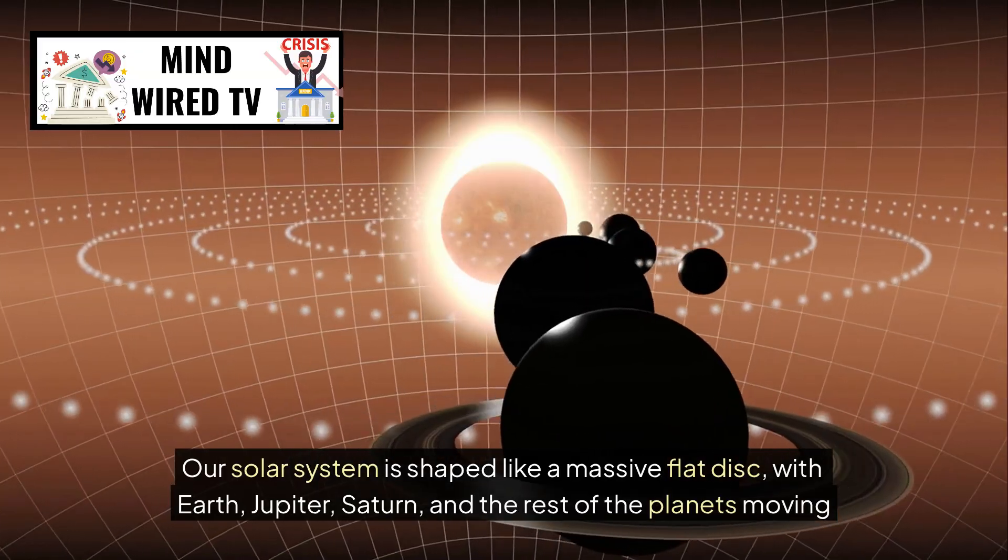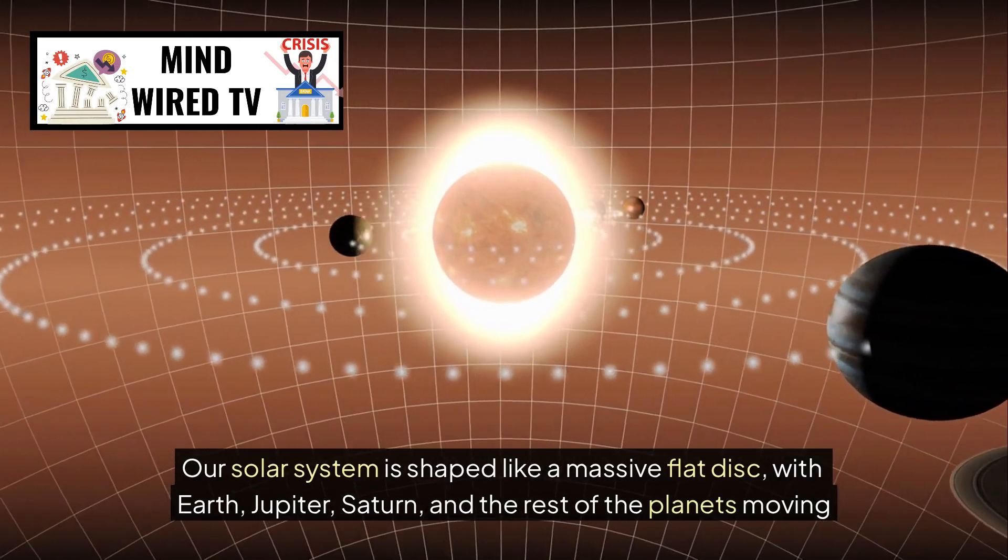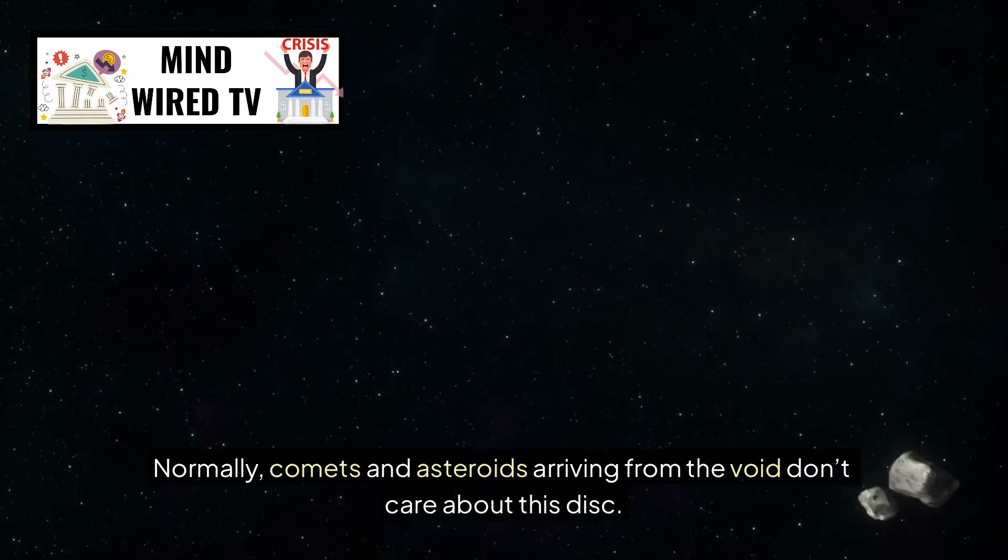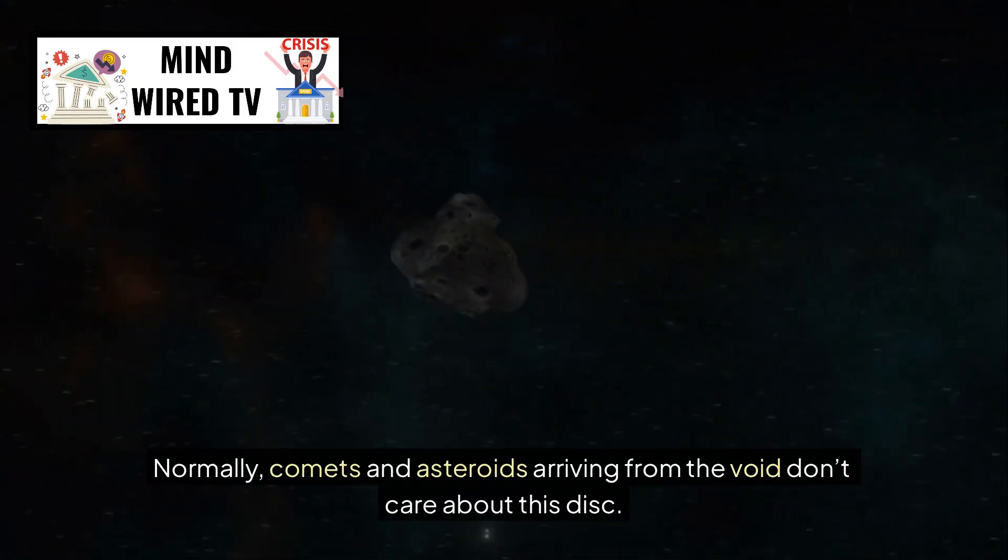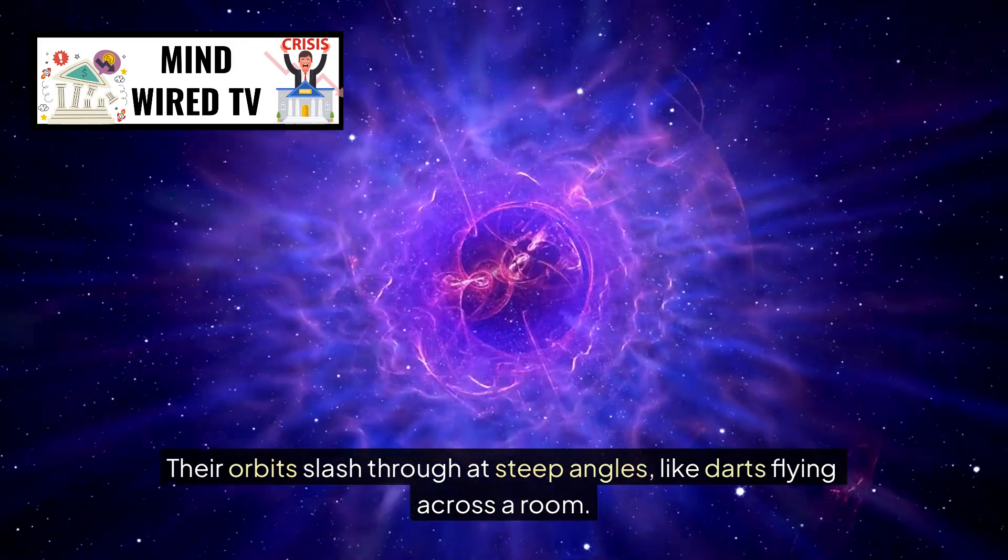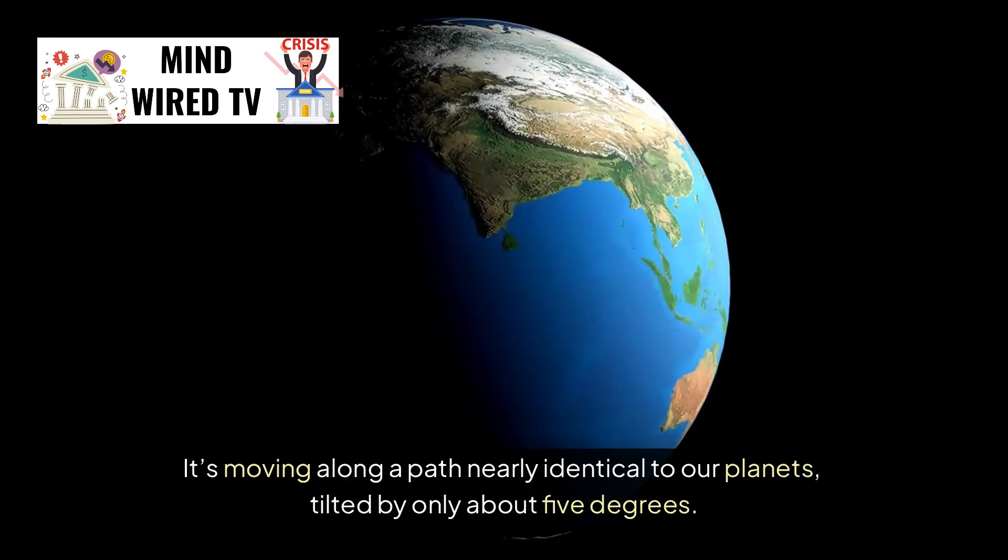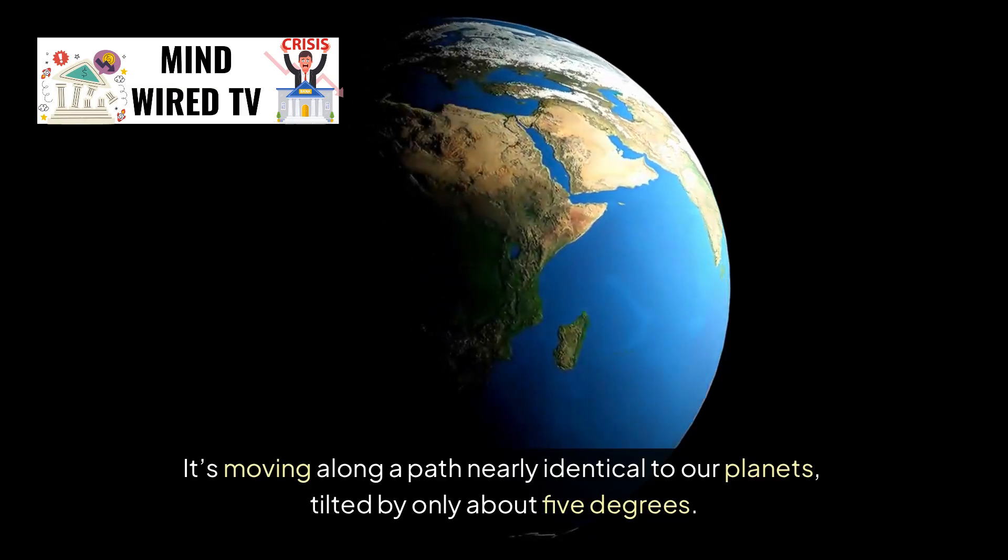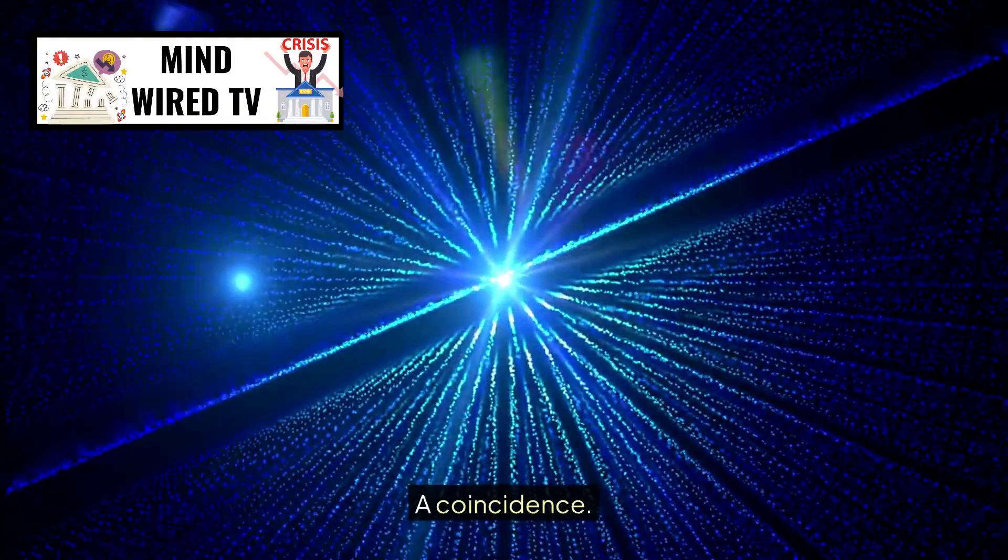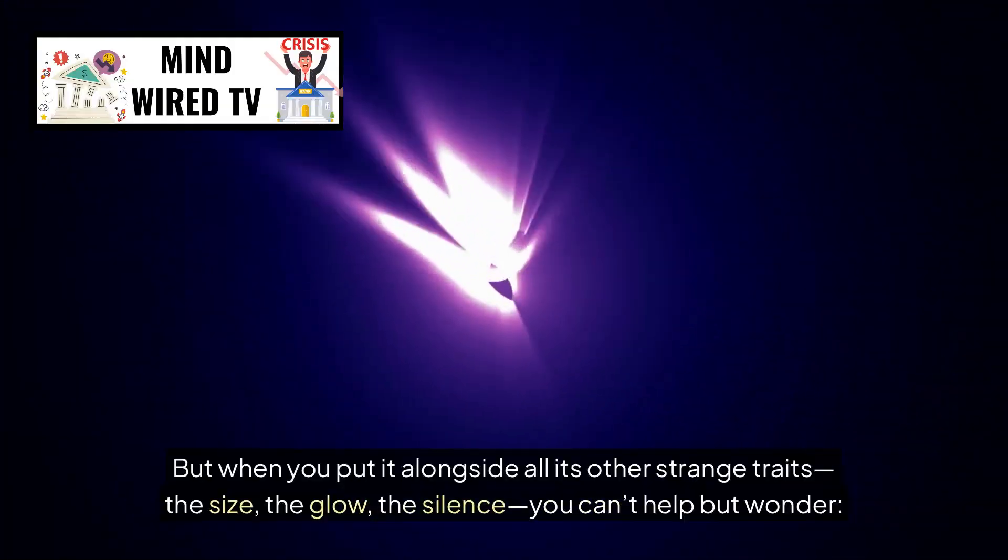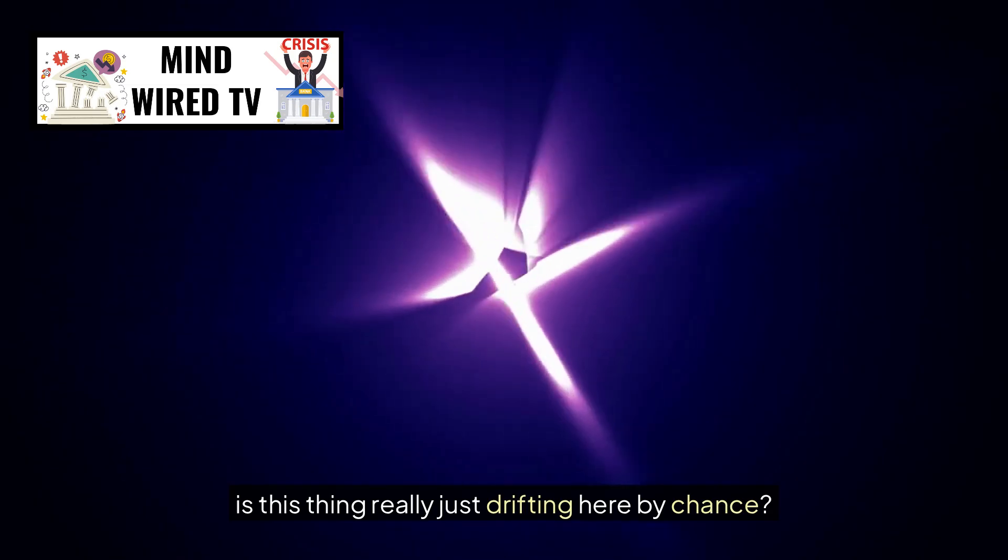Our solar system is shaped like a massive flat disk, with Earth, Jupiter, Saturn, and the rest of the planets moving around the Sun along that invisible sheet. Normally, comets and asteroids arriving from the void don't care about this disk. Their orbits slash through at steep angles, like darts flying across a room. But Atlas? It's moving along a path nearly identical to our planets, tilted by only about five degrees. One object doing that might be called luck, a coincidence. But when you put it alongside all its other strange traits, the size, the glow, the silence, you can't help but wonder, is this thing really just drifting here by chance? Or is there a bigger story behind why it aligns so perfectly with our cosmic neighborhood?